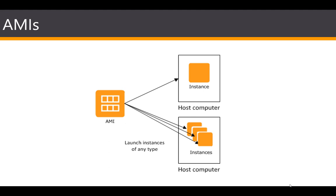If an instance fails or you stop it, you can launch a brand new one from a new AMI. AMIs are essentially machine images hosted on AWS from which we launch our EC2 instances. You can have pre-configured AMIs or customized AMIs, and we'll take a look at AMIs in a lot more detail later on in the course.